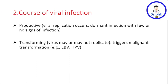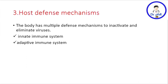The second type under persistent infection is productive, meaning viral replication occurs with dormant infection — few or no signs of infection. Lastly, there is transforming infection, where the virus may or may not replicate but triggers malignant transformation. Examples include EBV or HPV, the human papillomavirus.